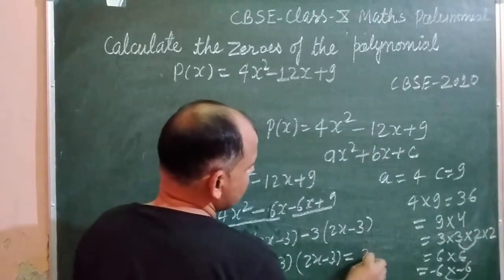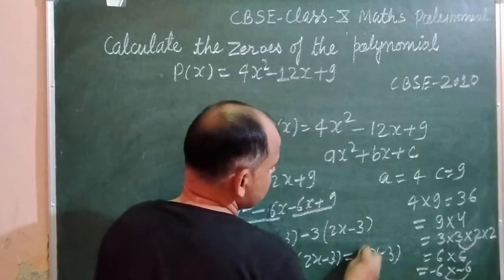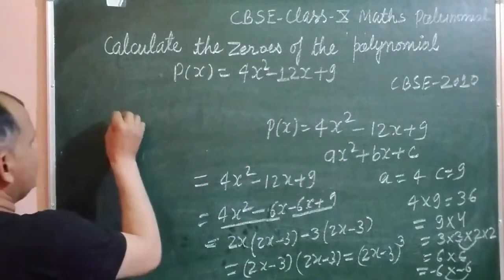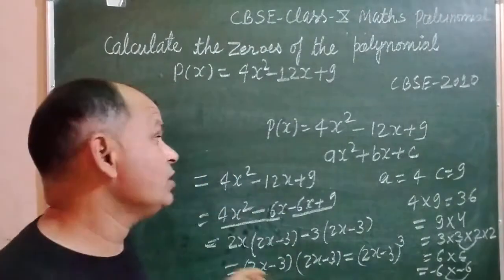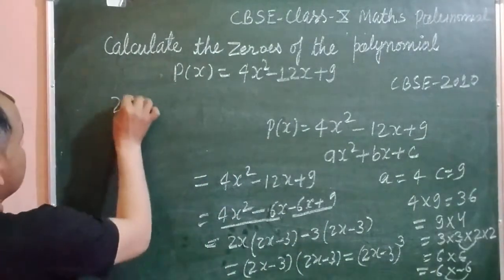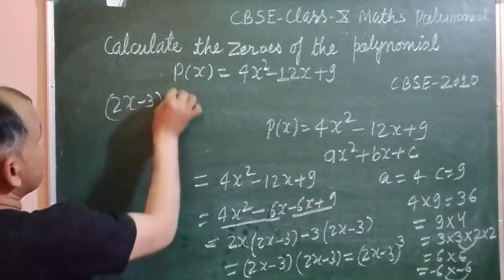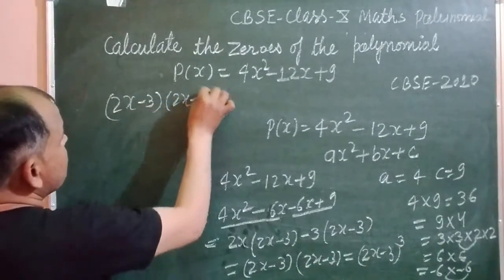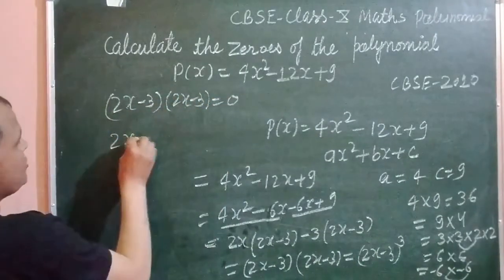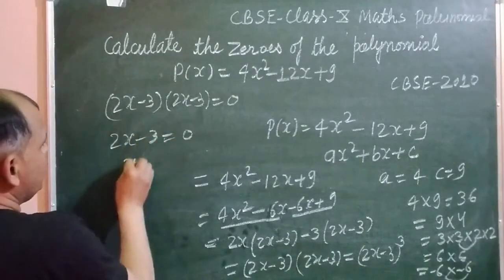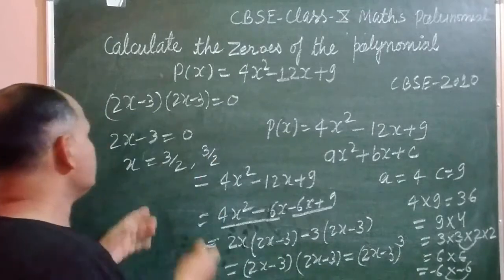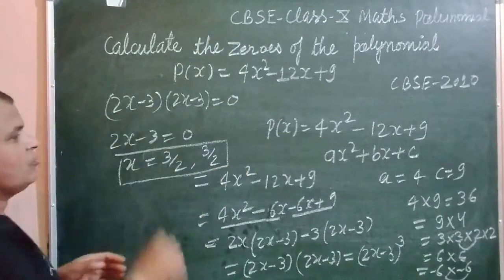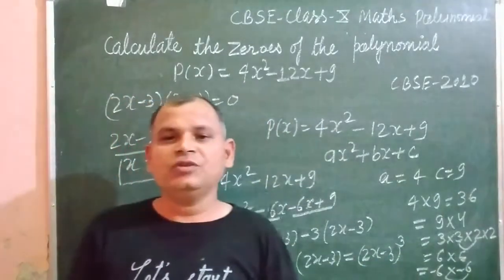Or it will become the square of (2x - 3). Now if you want to find the zeros of this quadratic polynomial, then we put it equal to 0. 2x - 3 = 0, so x = 3/2. So we have two values which are the same, same roots or same zeros of the polynomial.